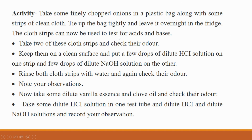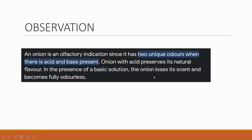Now you can test the cloth strips. You can tell whether a substance inside is acidic or basic. You will check the smell of the strips. The observation is: if the substance is acidic, then the smell of the onion will come through. And if it is basic, the onion loses its scent and becomes odorless.